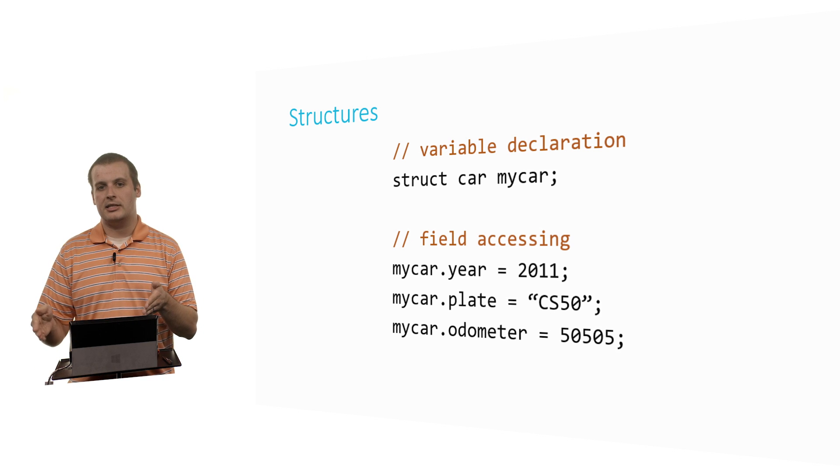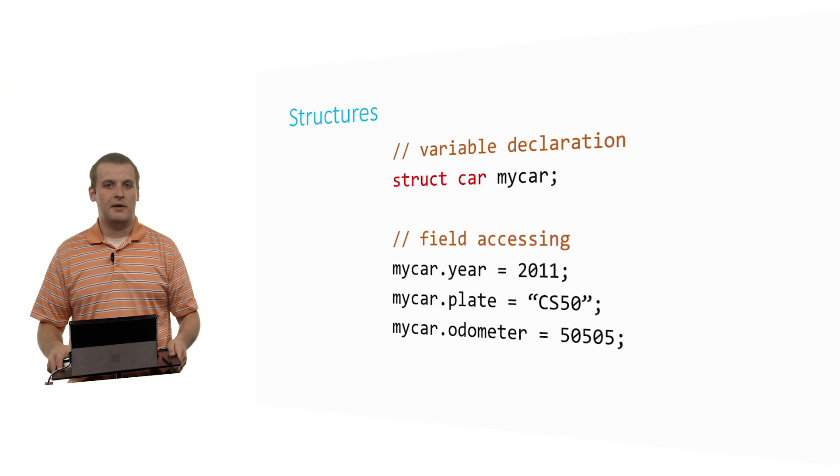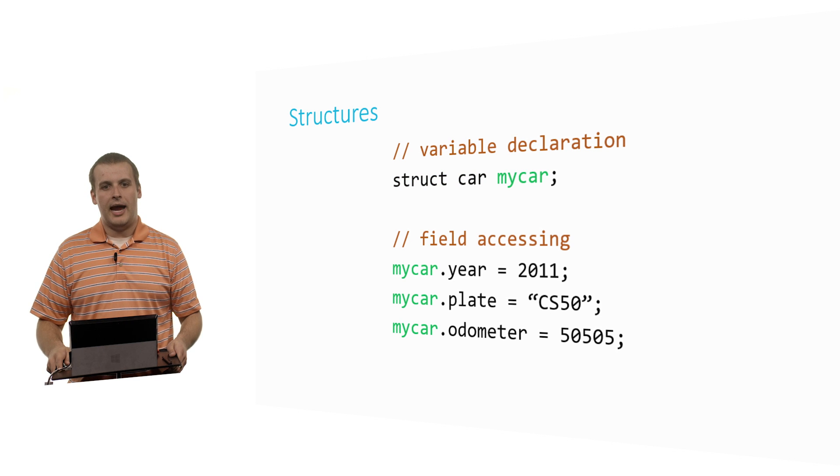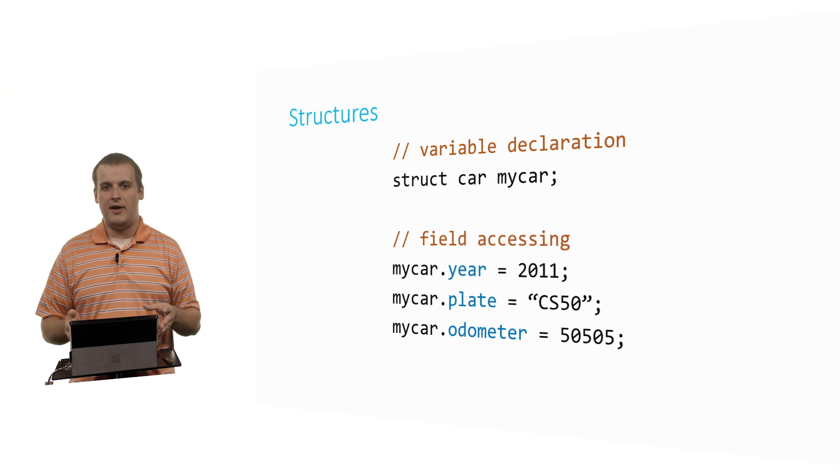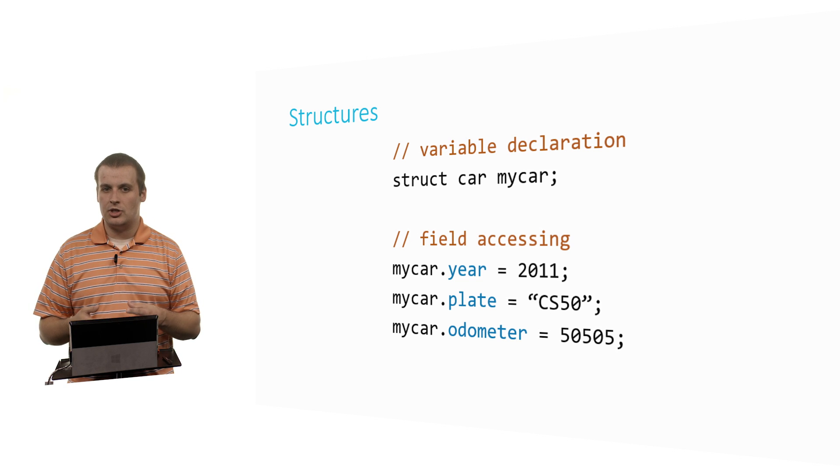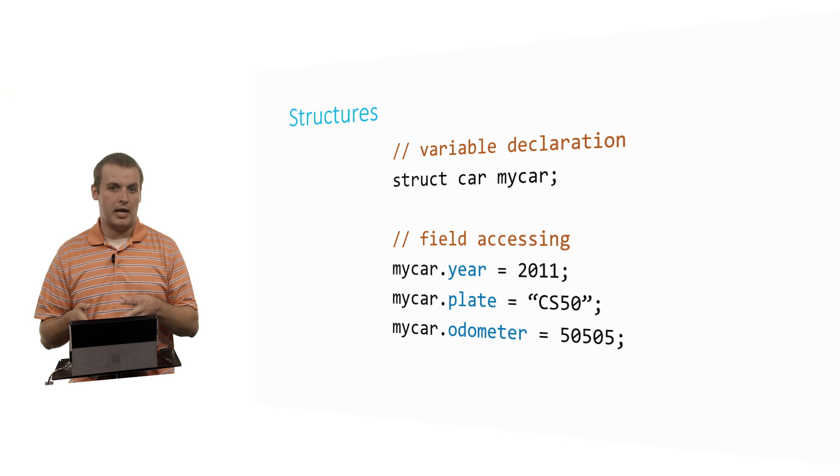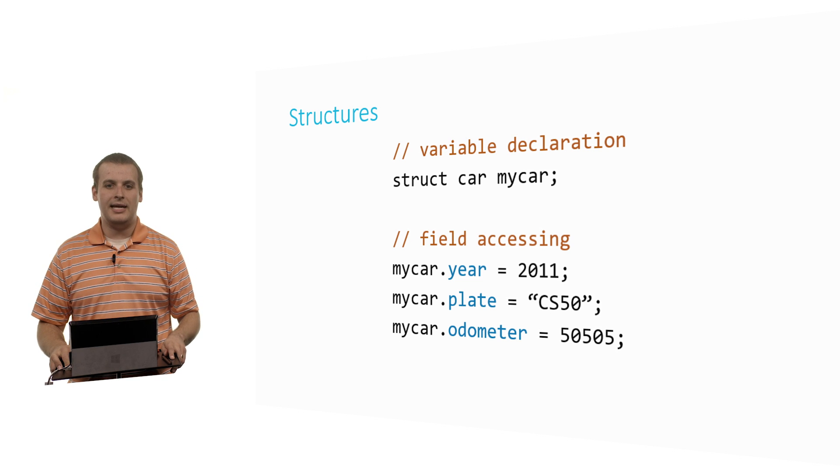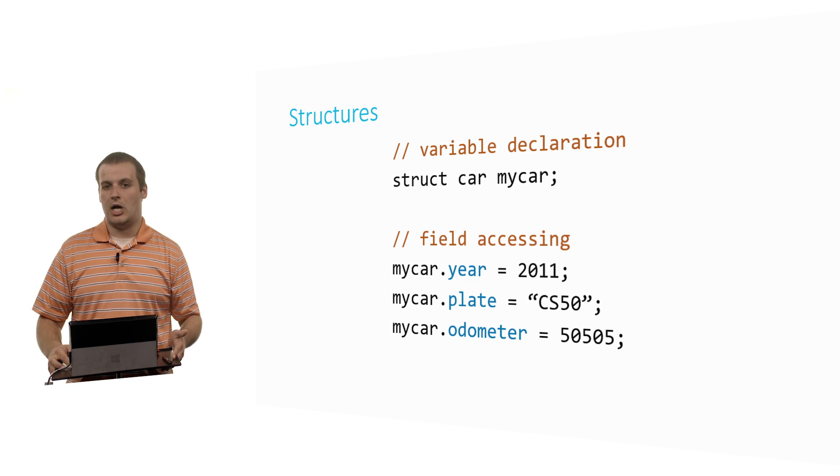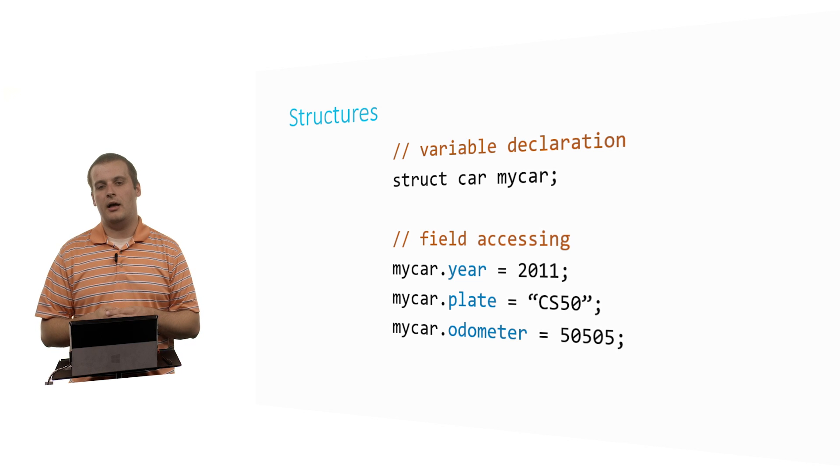Just like I could say int x or string name, semicolon. The data type here is struct car. The name of the variable is my car. Then I can use the dot operator to access the various fields of my car. I can say my car.year equals 2011. That's perfectly fine. Year, if you recall, was defined as an integer field inside of this struct car data type. So any variable of the struct car data type, such as my car, I can say my car.year equals, and then assign it some integer value, 2011. My car.plate equals CS50. My car.odometer equals 50505. All of those are perfectly fine, and that's how we access the fields of the structure.